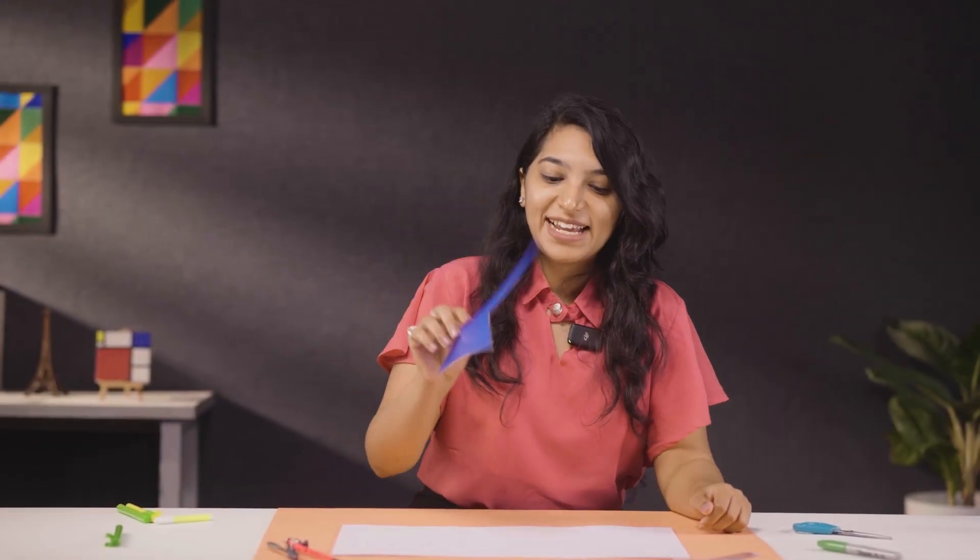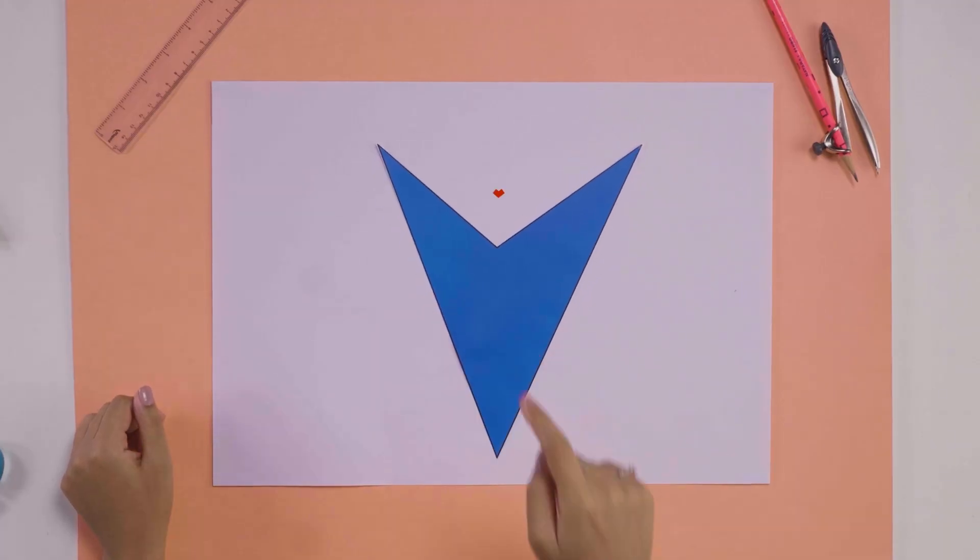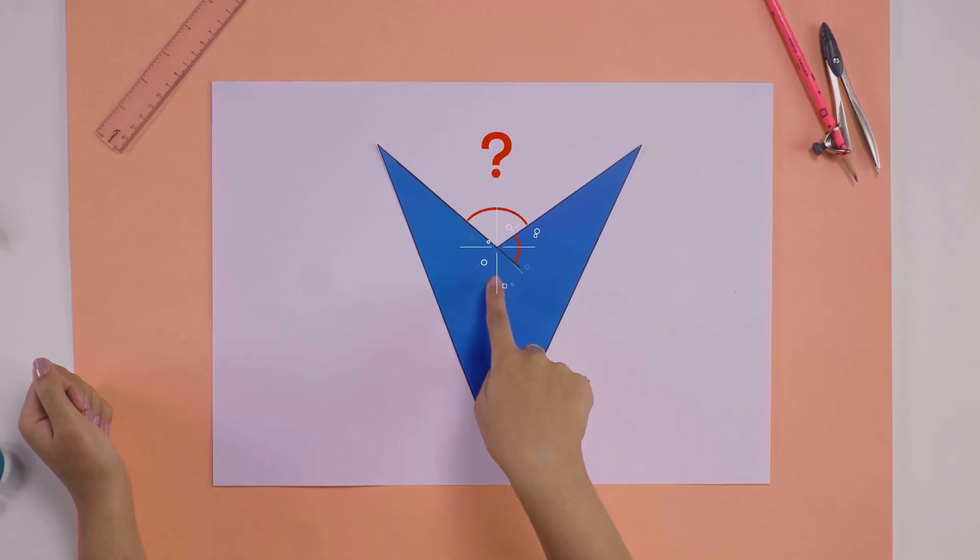Now what if the polygon was something like this, with one of its vertices pointing inwards? Will the sum of its exterior angles still be 360 degrees? What would be the exterior angle at this point? Why don't you explore this and let us know in the comments.